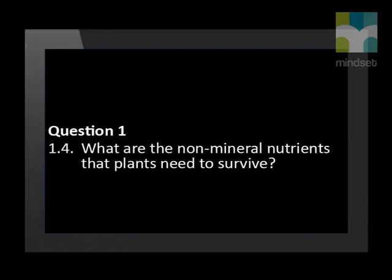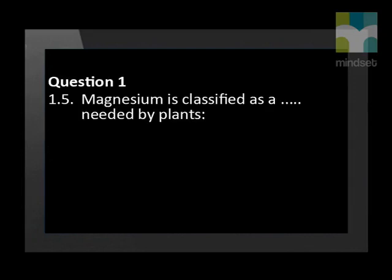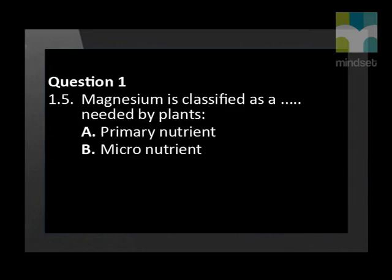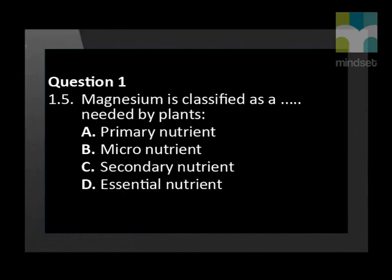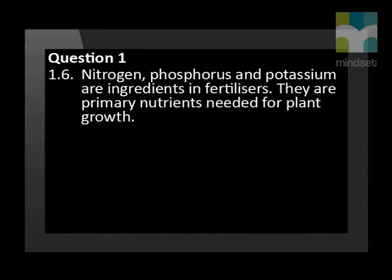What are the non-mineral nutrients that plants need to survive? Magnesium is classified as what type of nutrient needed by plants: primary nutrient, micronutrient, secondary nutrient, or essential nutrient? Nitrogen, phosphorus, and potassium are ingredients in fertilizers. They are primary nutrients needed for plant growth. Give three functions of primary nutrients.